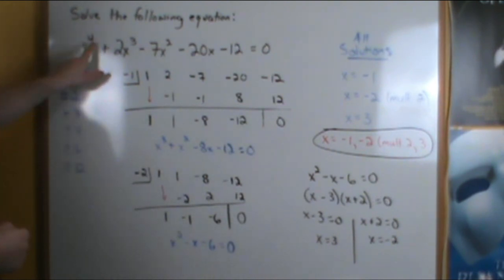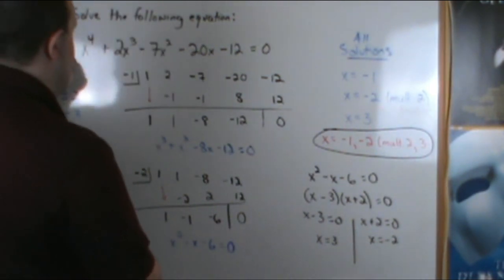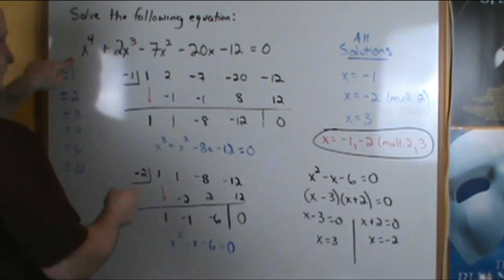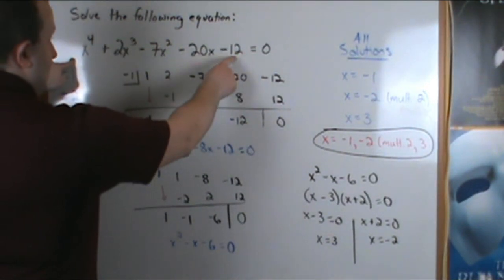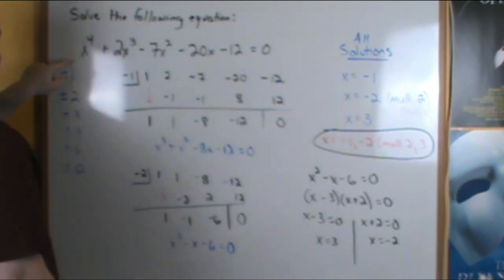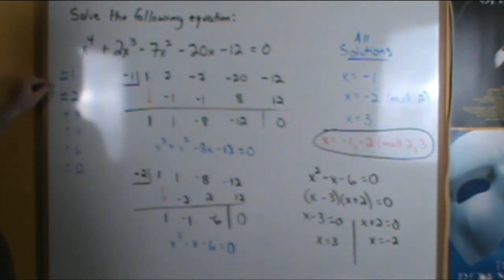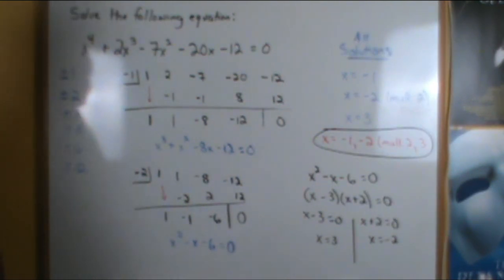You do the same process if we have a 5th degree, 6th degree, 7th degree, and just know that if there's a coefficient, a leading coefficient here, you have to take a fraction or a ratio of the factors of the constant to the factors of the leading coefficient. You might come up with some fractions. And if you do come up with fractions, test the integer ones first, because integers are rational. Then if none of them work, do some synthetic substitution with fractions.